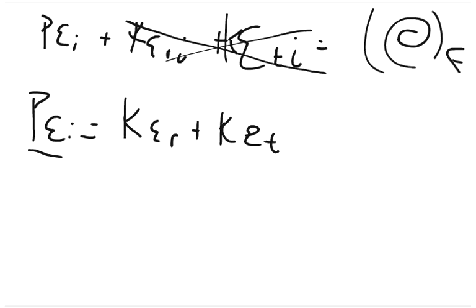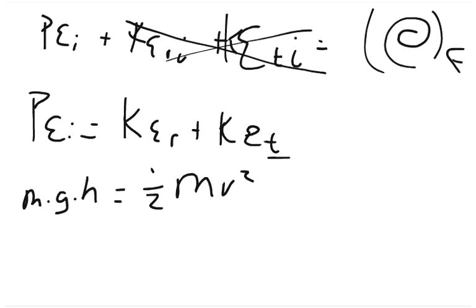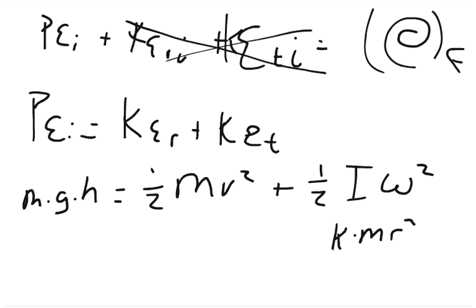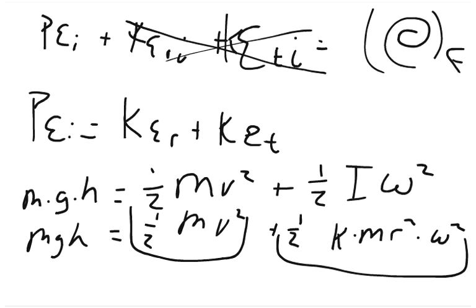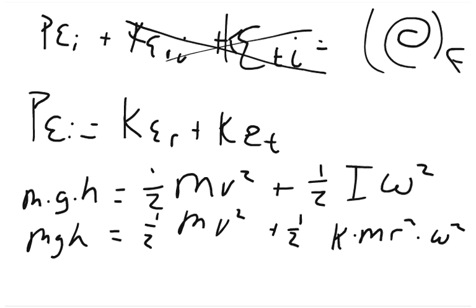I'm going to replace each one of these terms with its definition. Potential energy is mgh, and that's going to equal one half mv squared, which is the translational kinetic energy, plus one half times the moment of inertia times omega squared, which is the rotational kinetic energy. We can break I down into some constant k times mr squared.